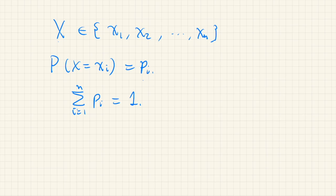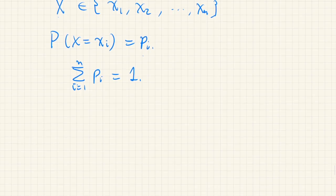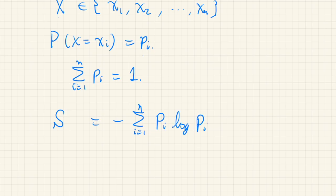When a probability distribution is given, the entropy S is defined by the negative of the sum of pi times log pi. In information theory we usually use base 2 for this logarithm, but here it can be any base since it's just a matter of a constant factor. We use natural logarithm, that is log base e.